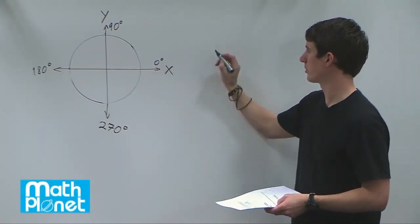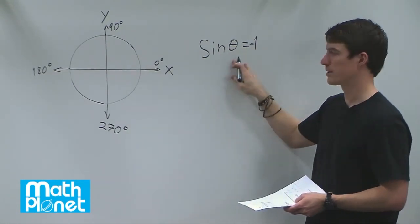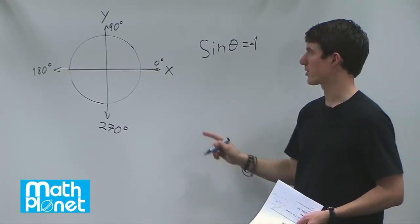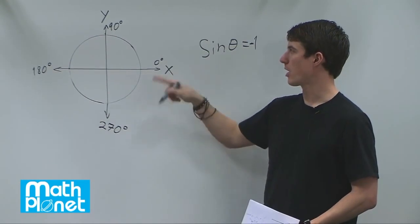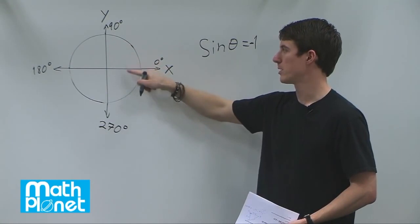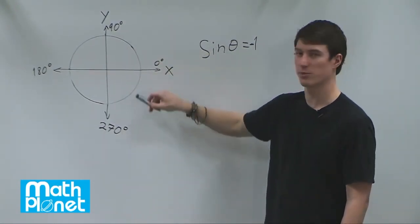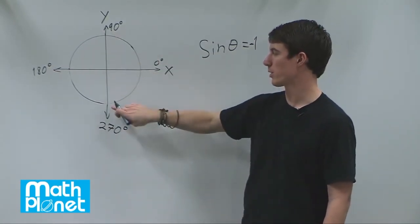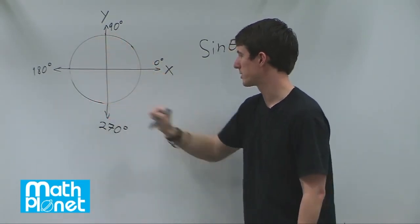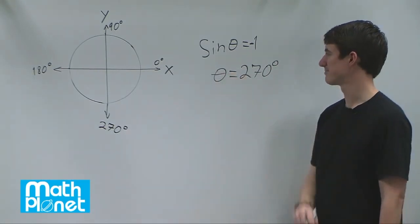Here we want to use the unit circle to find theta if sine of theta equals negative 1. Sine in the unit circle represents opposite over hypotenuse, and since the hypotenuse is always 1, sine corresponds to the y-value or height. We need the y-value equal to negative 1. There are only two points with magnitude 1 on the unit circle, and for negative 1, we go from 0, 90, 180 all the way to 270 degrees. So theta equals 270 degrees.